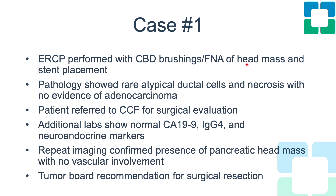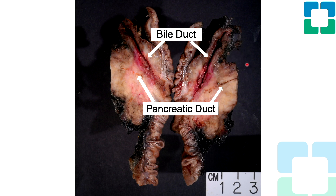Additional labs showed a completely normal CA-19-9, no elevations in IgG4, and no elevations in chromogranin or any other neuroendocrine markers. Because this was atypical, repeat cross-sectional imaging was performed, re-demonstrating the pancreatic mass but no vascular involvement. It was discussed extensively at the multidisciplinary tumor board, and ultimately the decision was to recommend the patient for surgical resection.